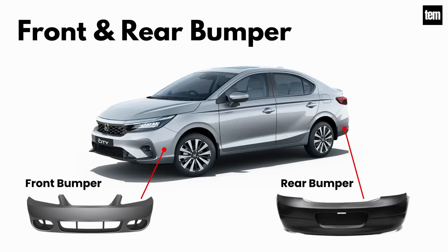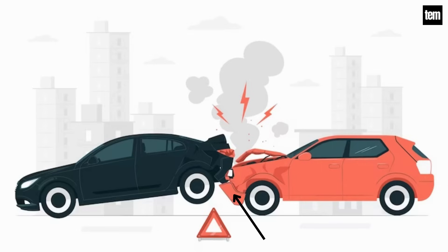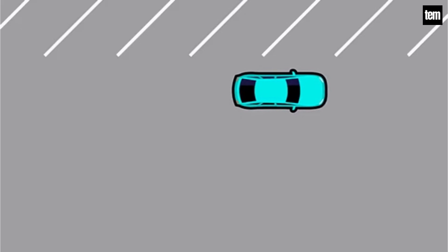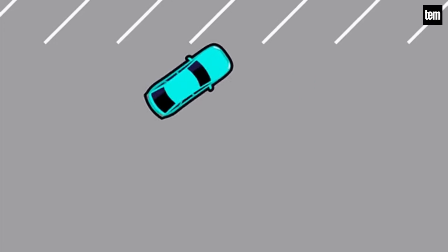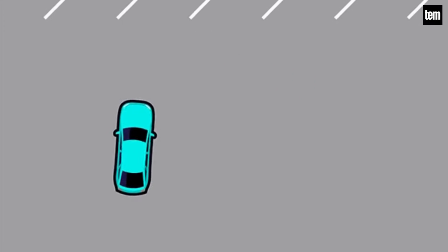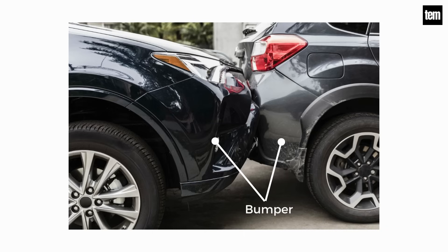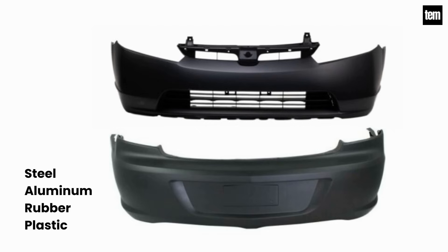Front and rear bumper. The function of the bumper is to protect your car if a sudden collision happens. The front bumper absorbs most of the impact during low-speed collisions to prevent serious damage to the driver, vehicle, and passengers. The rear bumper is designed to prevent heavy damage when you hit a wall while taking a reverse turn. Bumpers are basically made of steel, aluminum, rubber, or plastic.